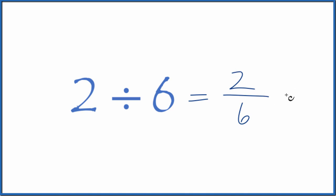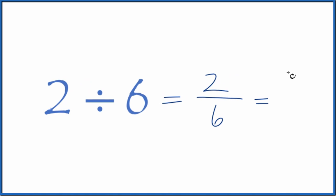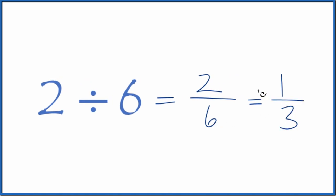because these are both even numbers. 2 divided by 2 is 1, 6 divided by 2 is 3, so 1 third.